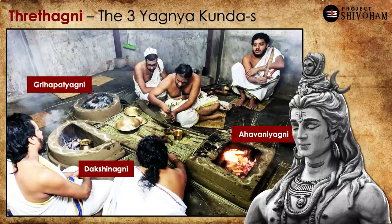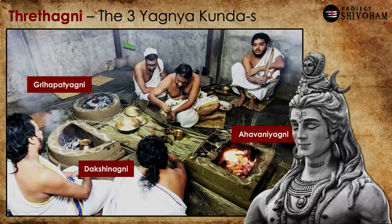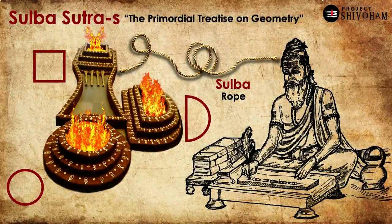The genesis of geometry in ancient Bharat began with constructing these three fire altars, which are in three distinct geometrical shapes. Yet one strong constraint has to be respected all the time: all three fire altars should have exactly the same area. By 'genesis of geometry,' I mean the well-codified knowledge from ancient Bharat as far as geometry is concerned.